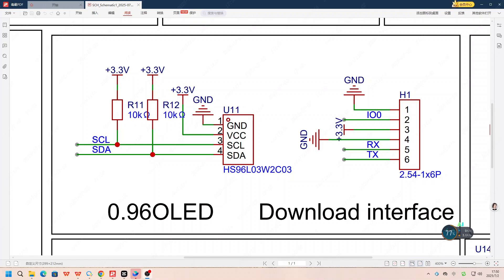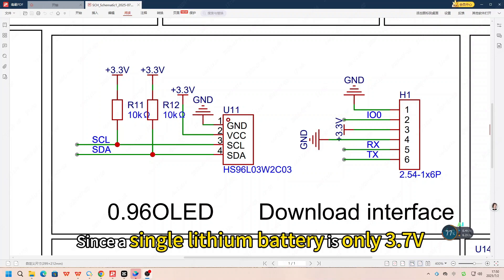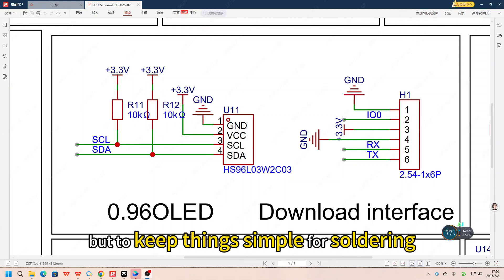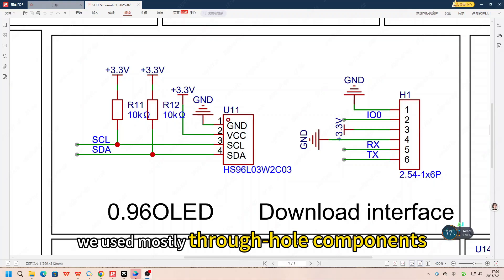About LDO selection, since the single lithium battery has only 3.7V, the servos need 5V, we could add a boost converter, but to keep things simple for soldering, we use mostly through-hole components.